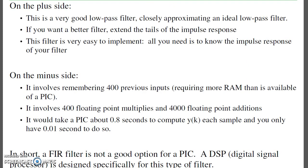On the plus side, this is a very good low-pass filter, closely approximating an ideal low-pass filter. If I want a better filter, just use more data points or a higher sampling rate. This filter is very easy to implement. All I need to do is just take the impulse response and convolve it with the actual input. So I just need a bunch of floating point multiplies and adds.